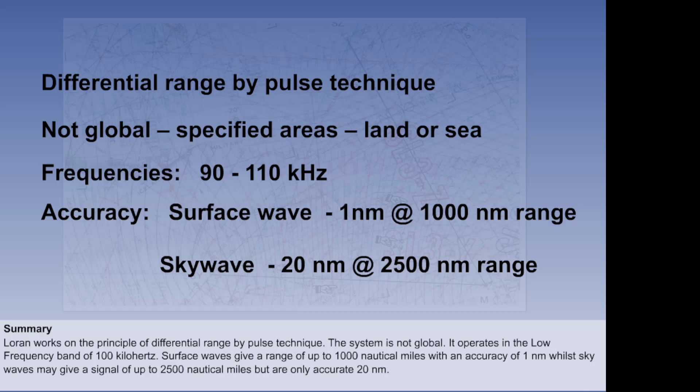Surface waves give a range of up to 1000 nautical miles with an accuracy of 1 nautical mile, while skywaves may give a signal of up to 2500 nautical miles but are only accurate to 20 nautical miles.